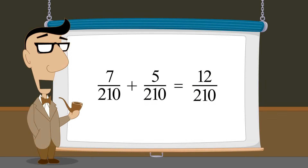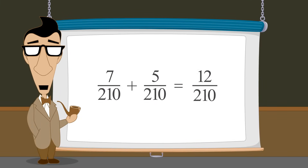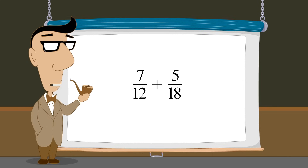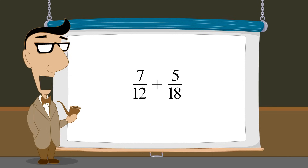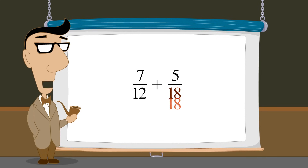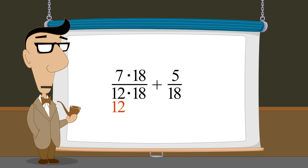To see the advantage of using the least common denominator, let's take the example we looked at in the beginning of the lecture: seven-twelfths plus five-eighteenths, and find a common denominator as we did in the previous lecture.